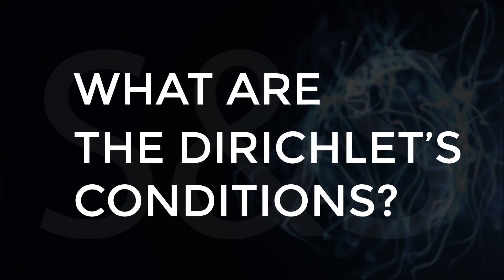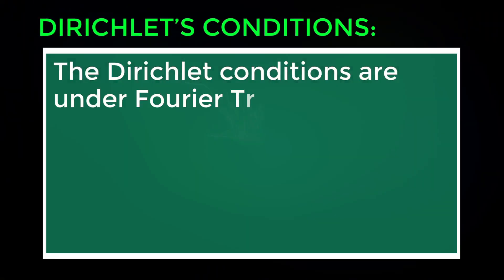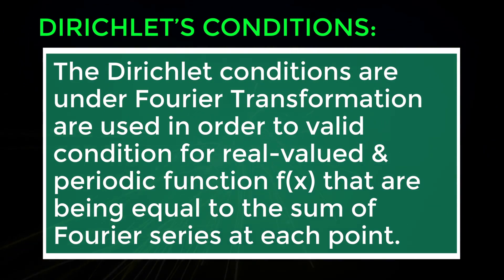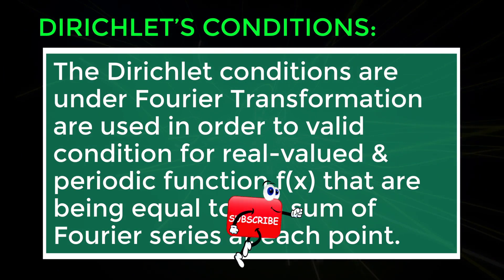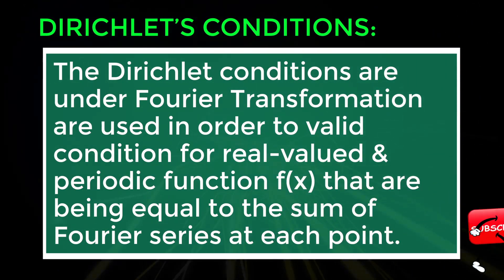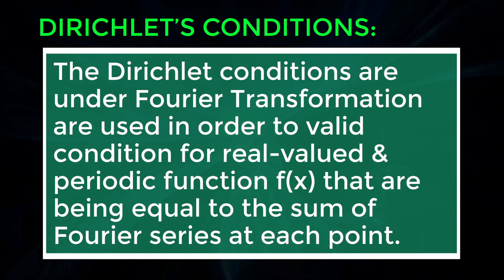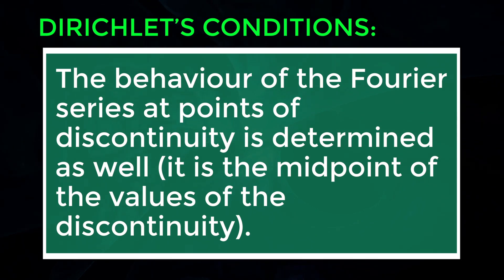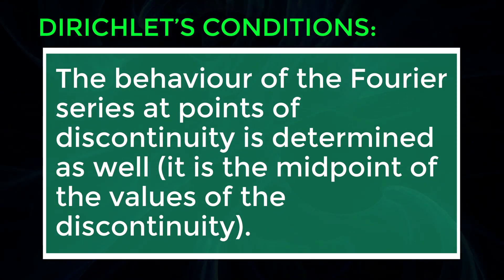What are the Dirichlet's Conditions? The Dirichlet conditions, under Fourier transformation, are used in order to validate conditions for a real-valued and periodic function f, that is equal to the sum of its Fourier series at each point where f is a continuous function. The behaviour of the Fourier series at points of discontinuity is determined as well — it is the midpoint of the values at the discontinuity.